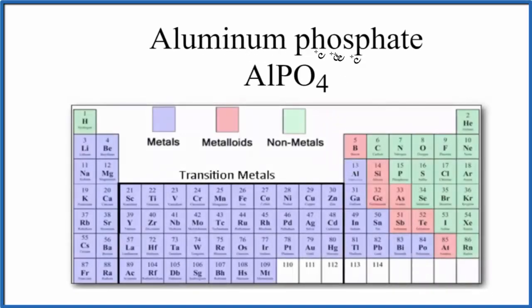In this video, we'll look at whether aluminum phosphate, that's AlPO4, is ionic or covalent.